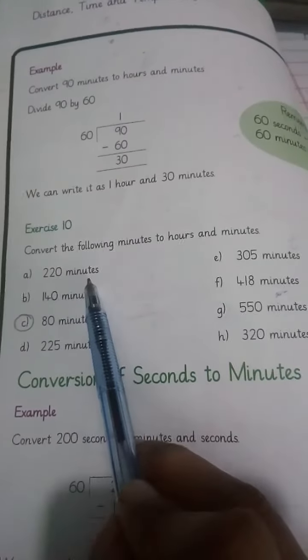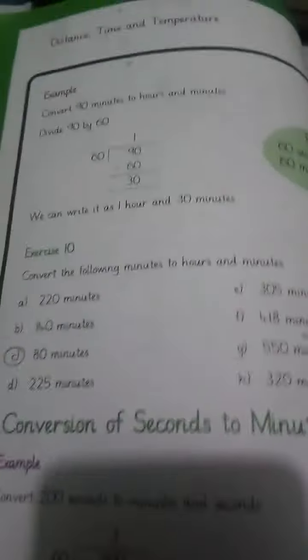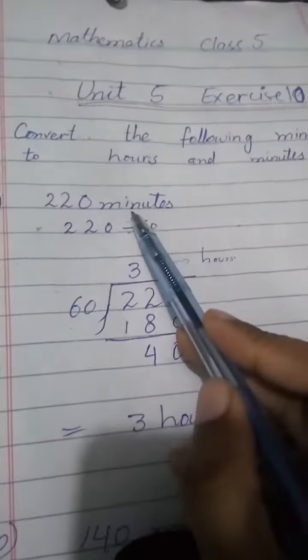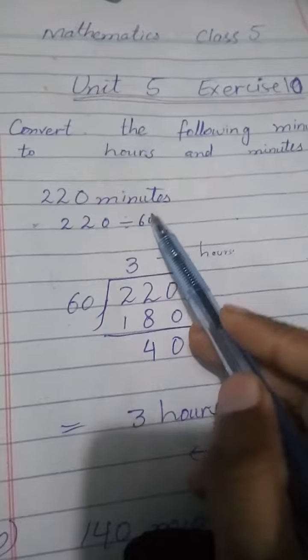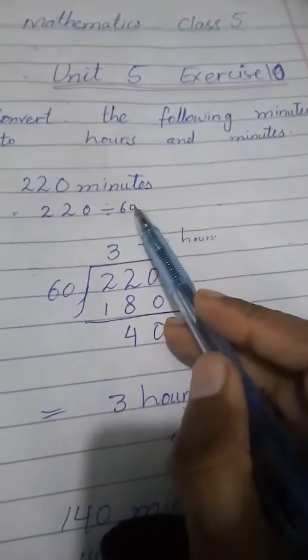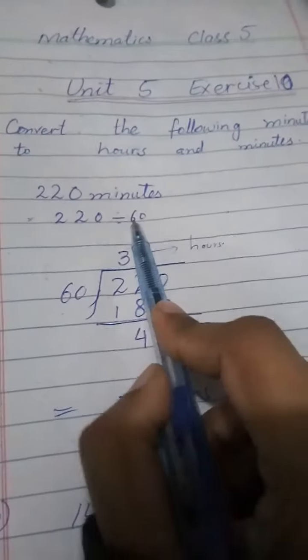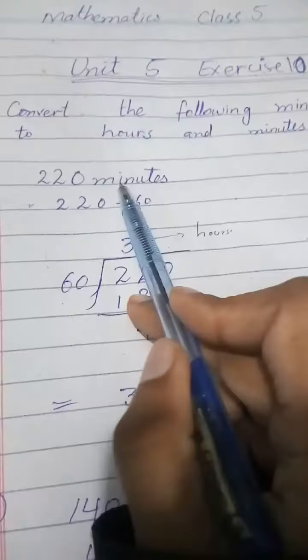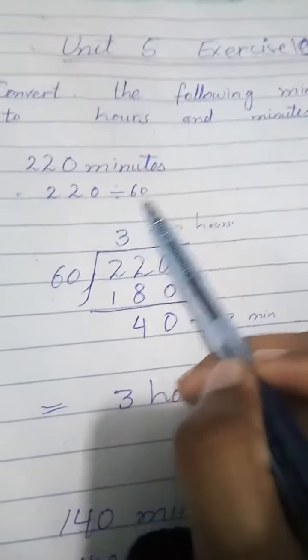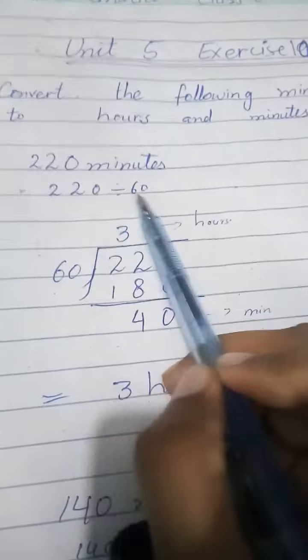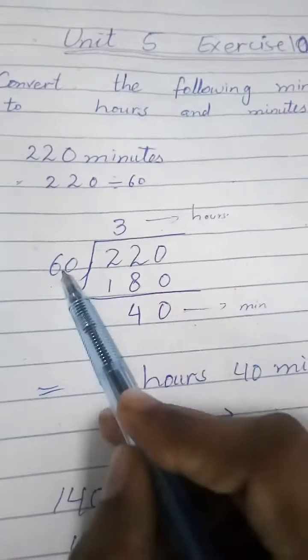For changing minutes into hours, we will divide by 60. So 220 minutes divided by 60.